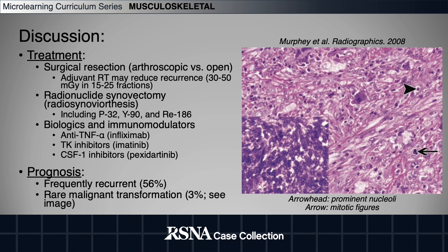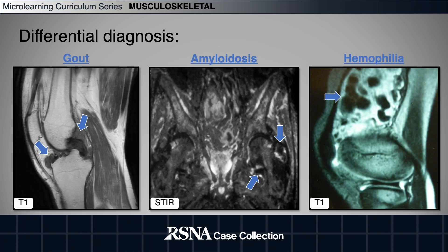Unfortunately, recurrence is common, and though rare, a malignant transformation rate of up to 3% has been reported, as seen in the photomicrograph picture to the right. Important differential diagnoses to keep in mind include crystal deposition disease such as gout, diffusely infiltrative processes such as amyloidosis, and hemophilic arthropathy, though these can often be distinguished from TGCT through clinical history.